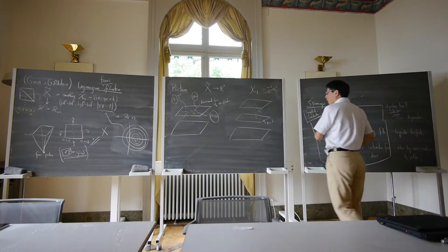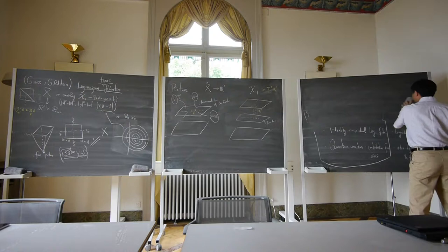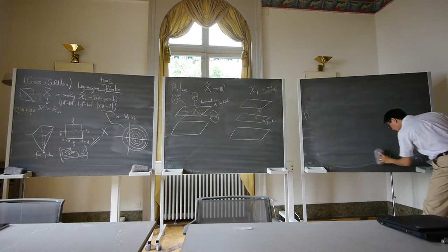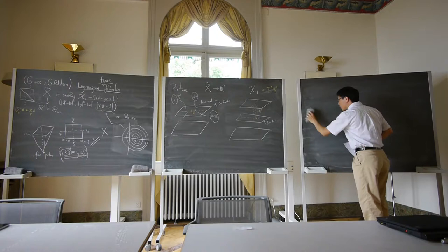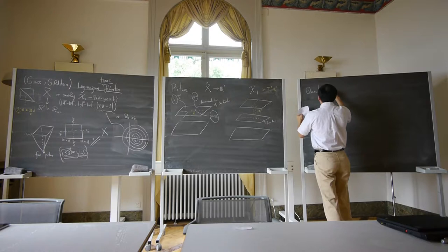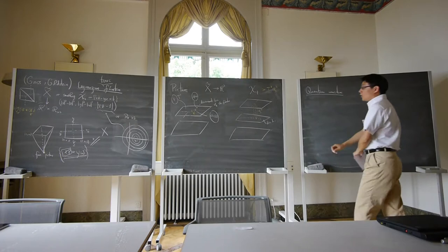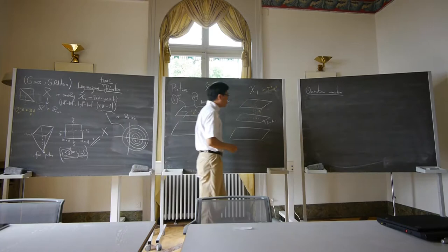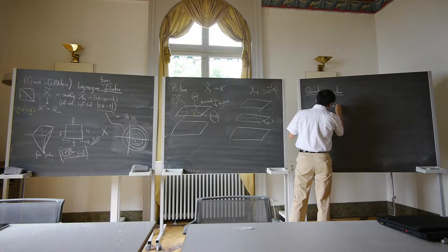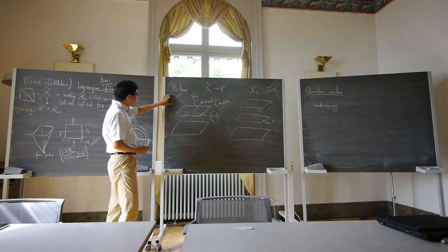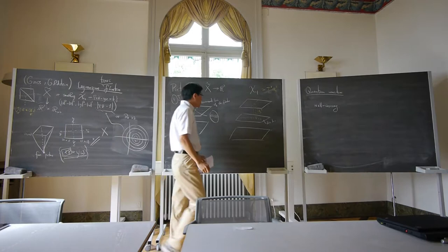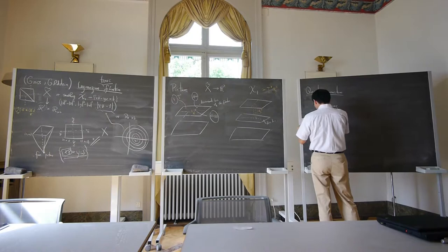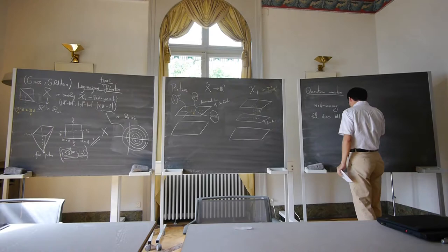We want to consider the quantum corrections — namely the counting of disks in this particular example. The key point is wall crossing. We consider a Lagrangian torus away from the discriminant locus and consider holomorphic disks bounded by a Lagrangian torus fiber.